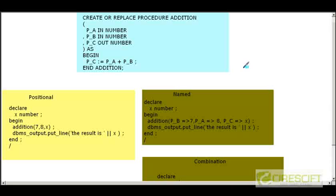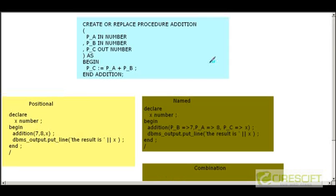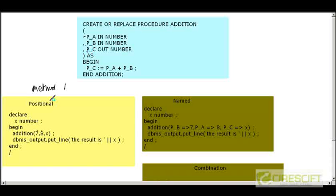The last thing to cover is how to pass parameters. Using the addition procedure as an example — we have three parameters: p_a as number, p_b as number, and p_c as output number. There are three ways to pass parameters. Method 1 is positional: you call 'addition(7, 8, x)', meaning 7 goes to p_a, 8 to p_b, and x to p_c based on their position.